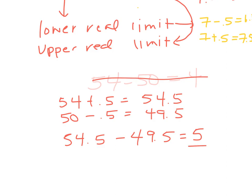Another way to figure this out, which some students will do, is that you could take 54 minus 50 and you could get 4. Then you could add 1 and that 1 would take into account the 0.5 that's coming from the lower real limit and the 0.5 that's coming from the upper real limit and you would get 5.